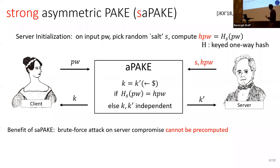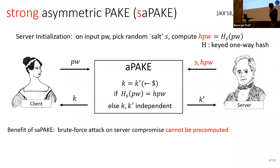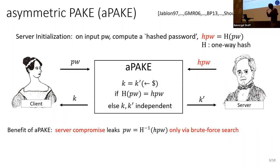There is a strengthened version called strong asymmetric PAKE, where the server's hash is randomized — commonly called a salt. The functionality checks the randomized hash. The key property is that the salt is private to the server and never leaves it, preventing pre-computation of brute-force attacks before server compromise. In the asymmetric PAKEs we address, the salt is by necessity public — derivable from client/server names or a nonce the server stores — because the hash must be computable by the client.